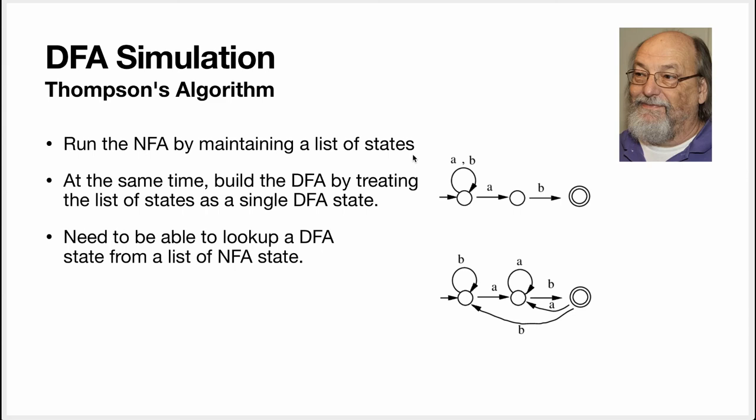And the way we do that is that when we see a new list of states that we haven't seen before, then we create a corresponding DFA state. Now this would have been useless in our previous example. That's because in a previous example, we never go back to a previous state. It's all linear. It's all left from right, and we never go from right to left.